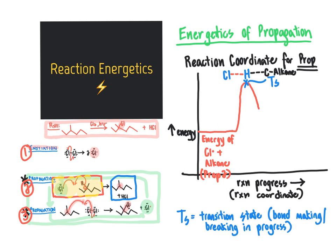After the transition state — that highest energy point — we come back down to a level point representing the energy of our intermediate formed as a result of that reaction step. That particular step of the mechanism yielded a carbon radical and HCl. So we draw in the energy of our carbon radical (C•) and our HCl at that intermediate energy level.